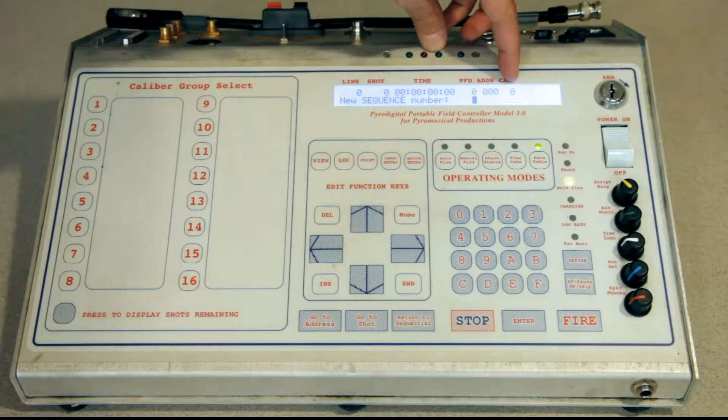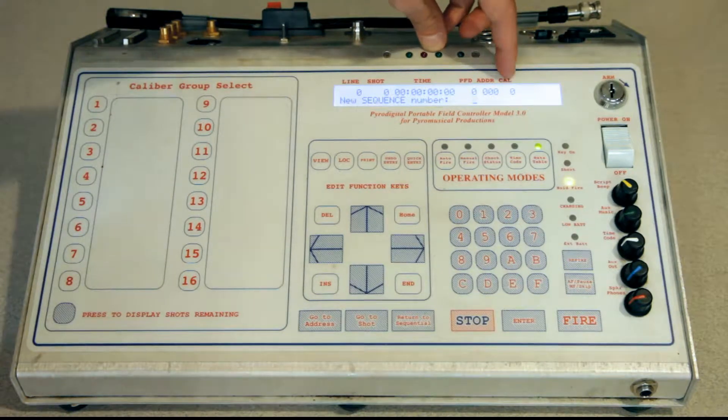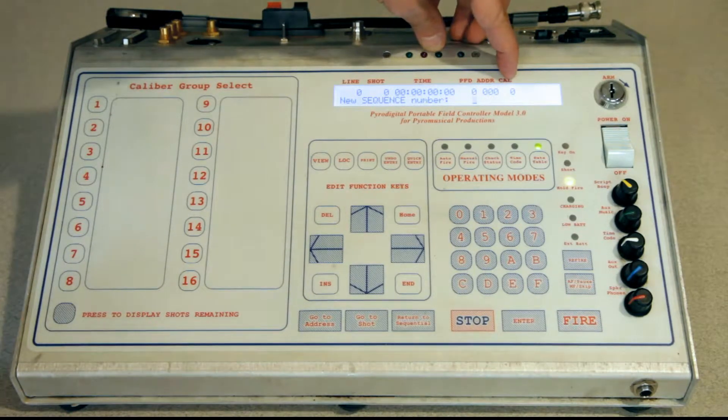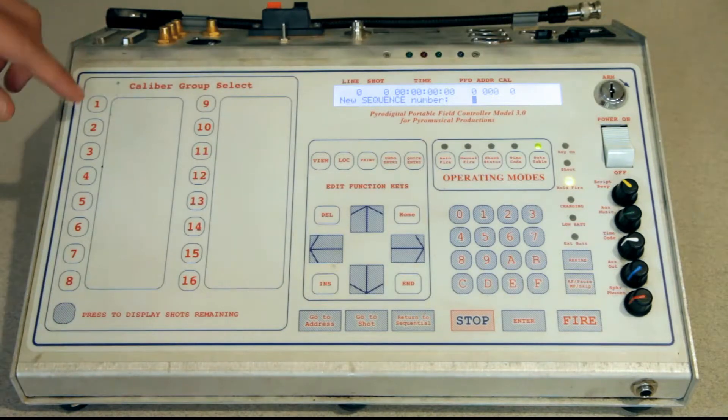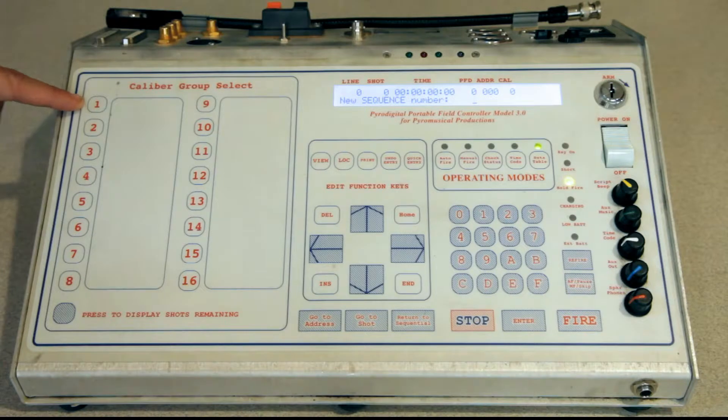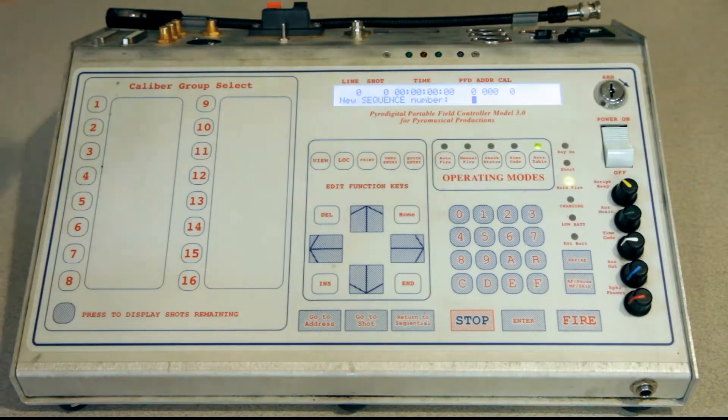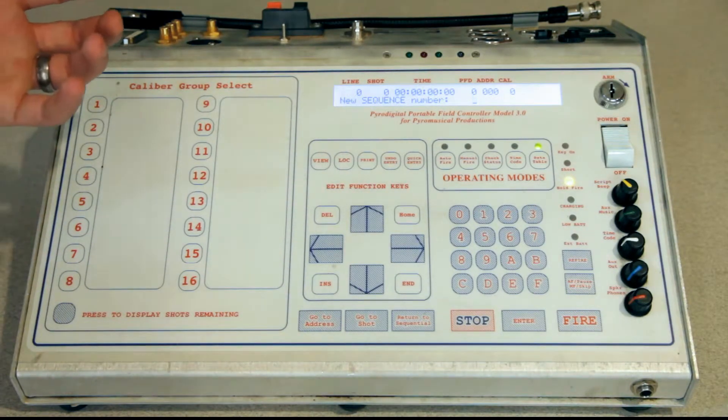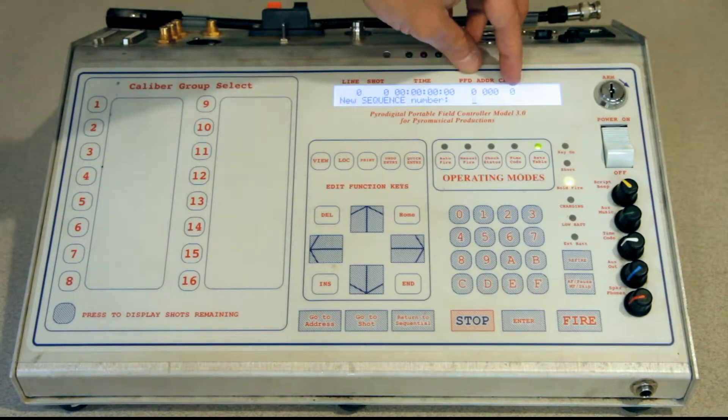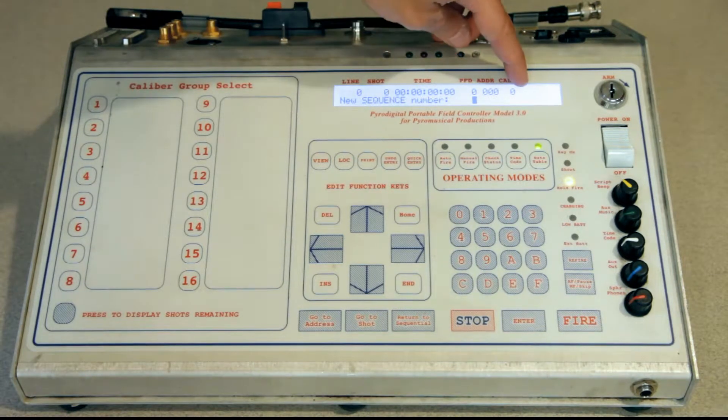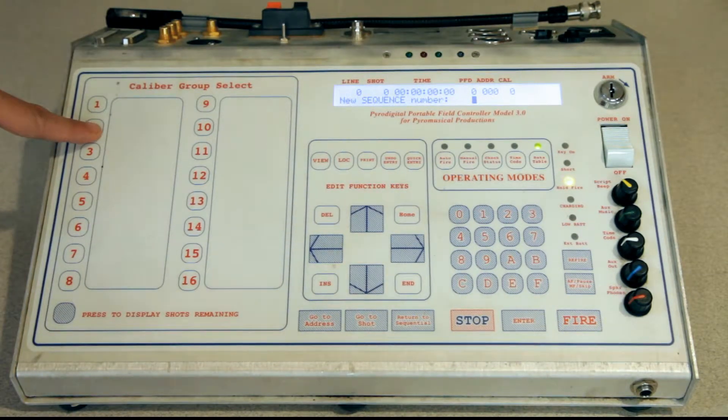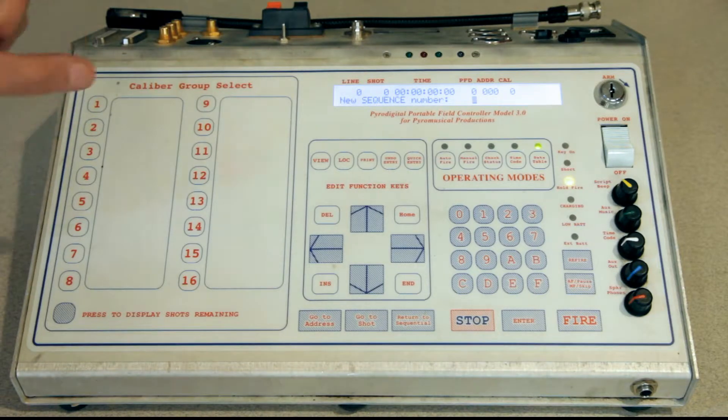We could have ten devices listed in caliber group one. If we hit caliber group select number one we would only be selecting that group of ten devices. We could have another five devices that have a caliber of two associated with them so that when we hit caliber group two we're only selecting those five devices to fire.